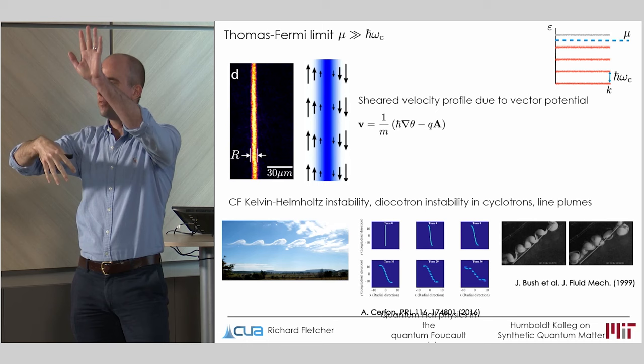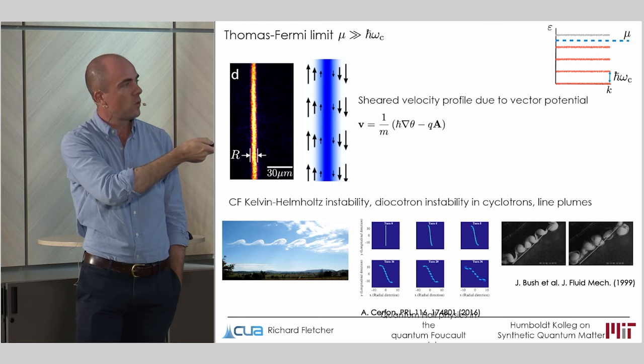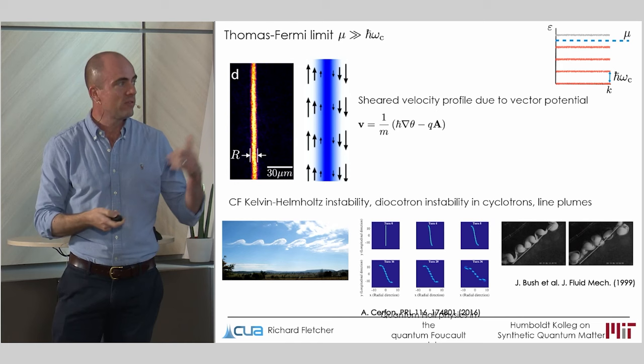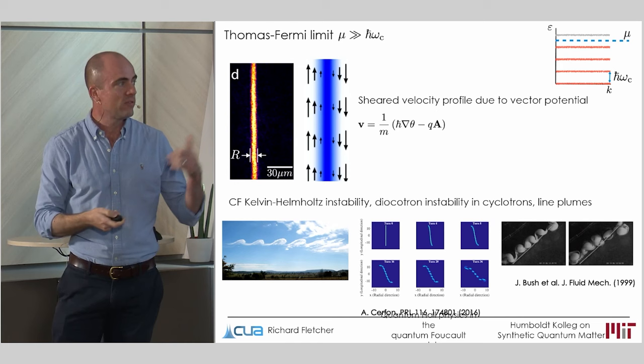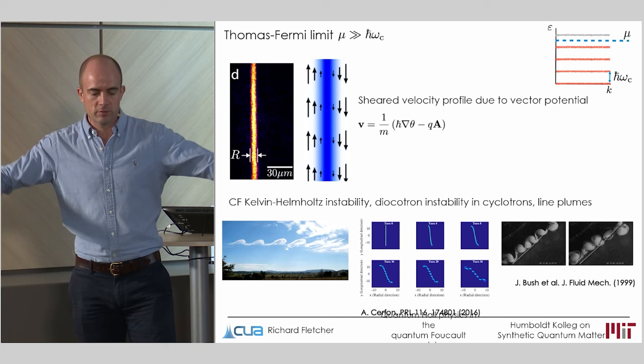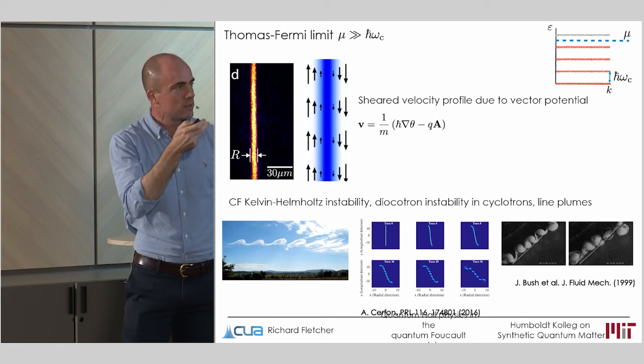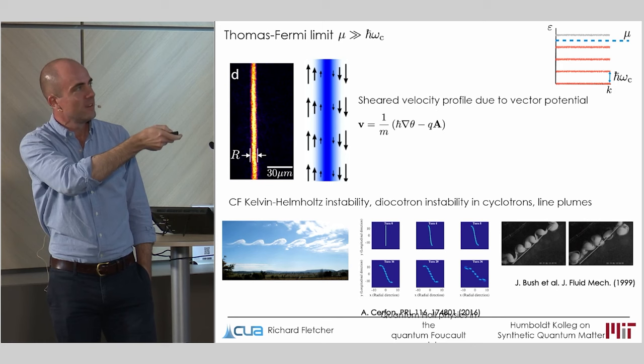It actually turns out that an identical instability to the one we see in our quantum gas shows up across, we figured about nine orders of magnitude in length scale, at some point we tried to figure this out. It shows up as the diocotron instability in a cyclotron, so there it's driven by the B field of the cyclotron and the Coulomb repulsion between particles within it. And also one of our math colleagues at MIT pointed out the same thing happens in oceans, the so-called line plumes. These are sort of strips of buoyant water emitted from some kind of volcanic ridge in the ocean, as it rises up through the water, the rotation of the Earth drives exactly the same transition. And so what we're seeing, you know, the difference here is that we can take, this is like an oceanic phenomenon, and using the quantum gas you can take it all the way to the lowest Landau level.